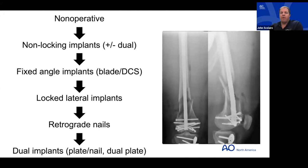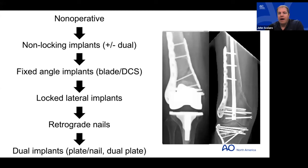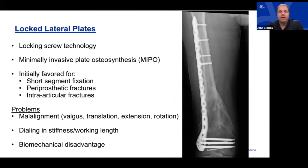Early retrograde nails were not appropriate for many of the distal femur fractures we now treat, but as implants developed with increased distal interlocking bolt options, things continued to change. Now we have combined plate-nail implants and dual fixation constructs. Single implant fixation still has a role in certain fractures — for example, a comminuted distal femur fracture with a laterally based locked plate placed percutaneously, which respects metaphyseal biology.